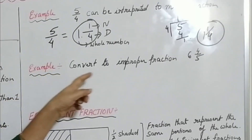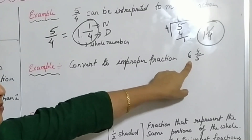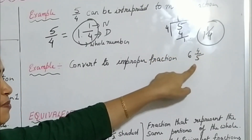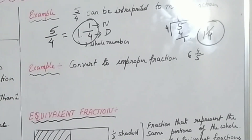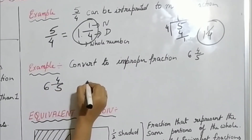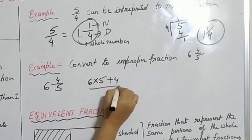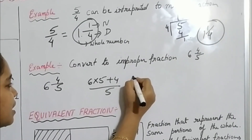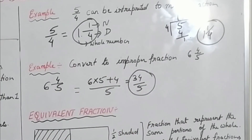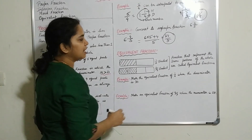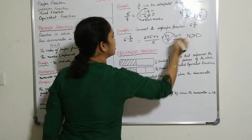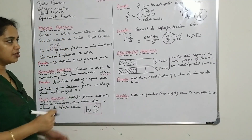Now convert the mixed fraction 6 and 4 by 5 into an improper fraction. Here 6 is the whole number, 4 is the numerator, and 5 is the denominator. Multiply 6 by 5 to get 30, then add the numerator 4: 30 plus 4 equals 34. So the improper fraction is 34 by 5, where the numerator 34 is greater than the denominator 5.